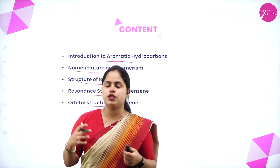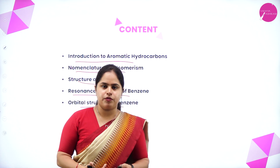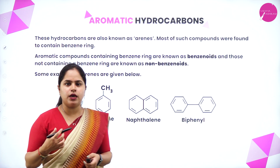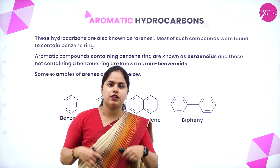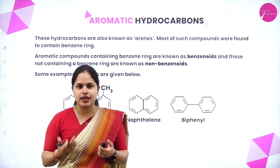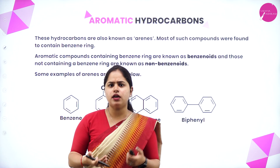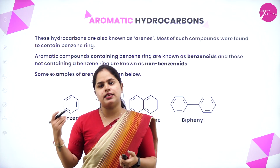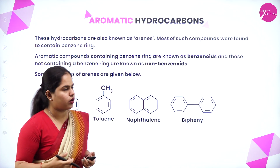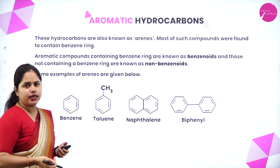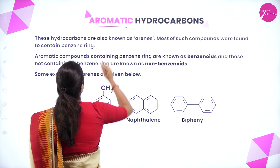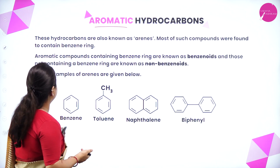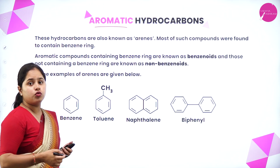In today's session, we are focusing on the details of benzene. So let's begin with what are aromatic hydrocarbons. We have already studied about the aliphatic hydrocarbons — alkanes, alkenes and alkynes — which do not have a cyclic structure. Alkanes are the saturated ones and alkenes and alkynes are the unsaturated hydrocarbons. These hydrocarbons are also known as aranes.